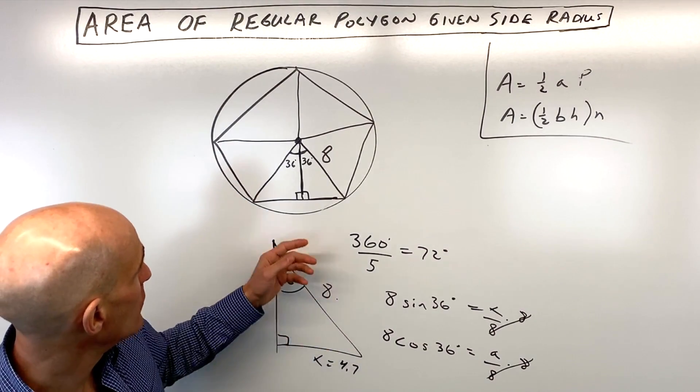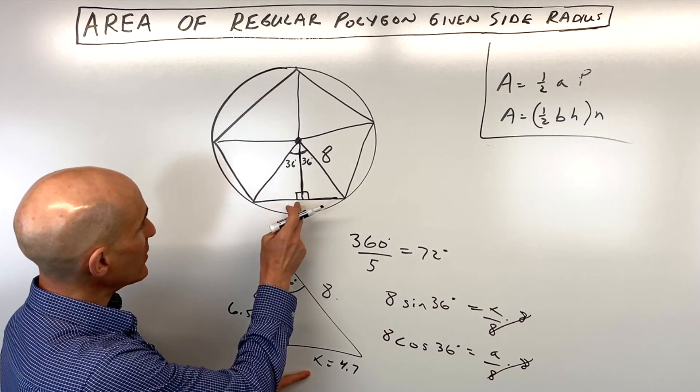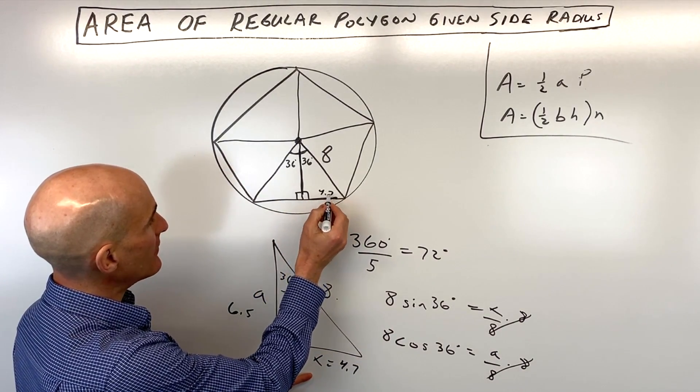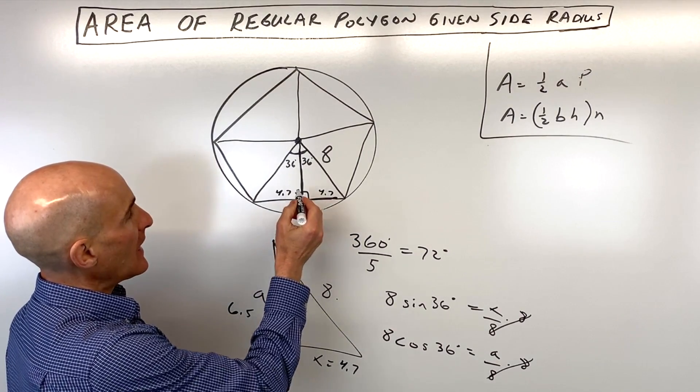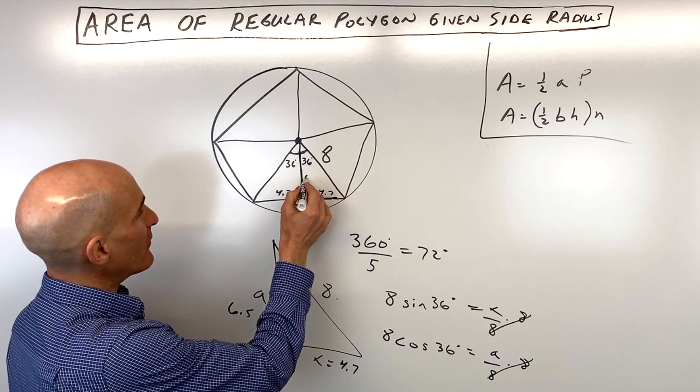Okay, so now what we're going to do is we're going to go back to the triangle here. If this is 4.7, that's right here, 4.7. This is also 4.7, so that's 9.4. And the height of the triangle we know is 6.5.